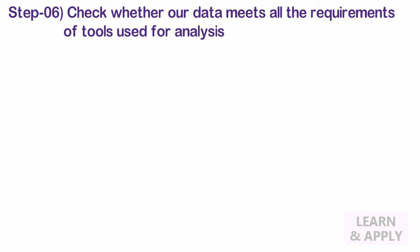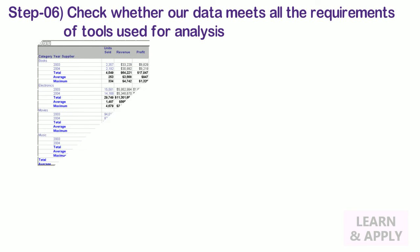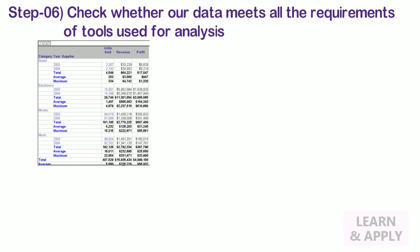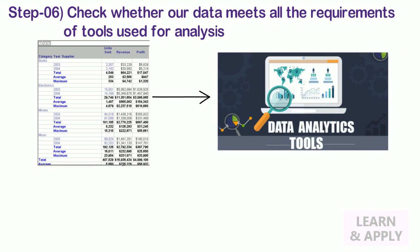Step 6: Check whether our data meets all the requirements of tools used for analysis. By outlining subsequent data, we need to check whether our data meets all the requirements of the tools used for the analysis of data.